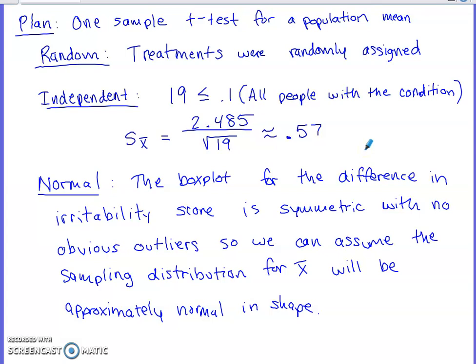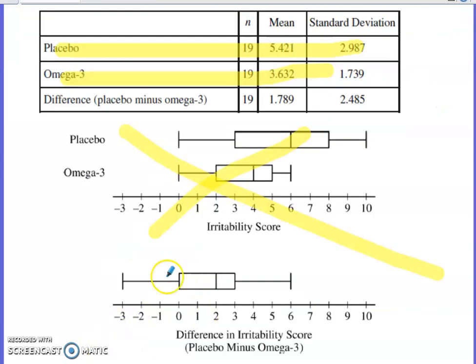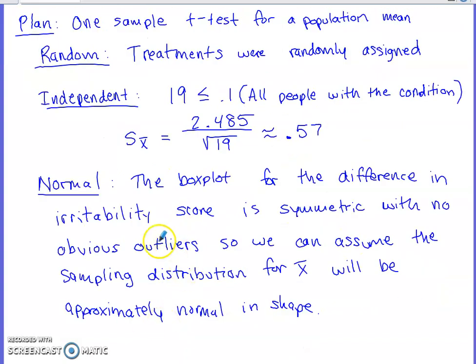And then the last thing that we need to make sure that we do that gives us the green light to do the concluding steps, we have to make sure that there's some sort of argument that we can use to argue that we're approximately normal in shape for our sampling distribution. They don't tell us that in this situation. So here's where I came back and I looked at this box plot, and I said, well, this box plot is approximately symmetric with no major skewness or obvious outliers. And that's the argument that I used to try to say it seems like our sampling distribution for our sample mean is going to be approximately normal in shape.